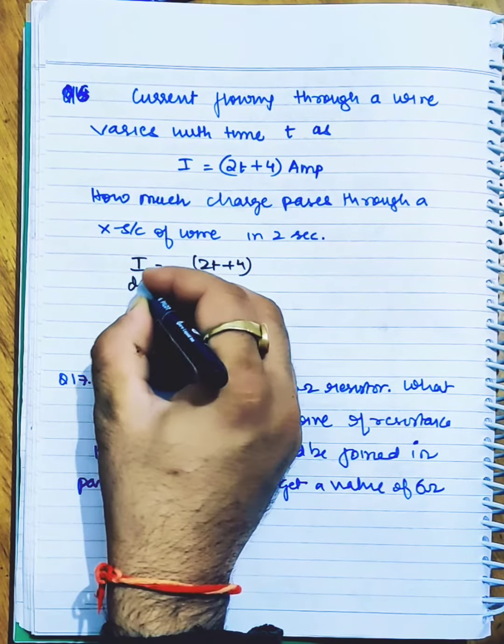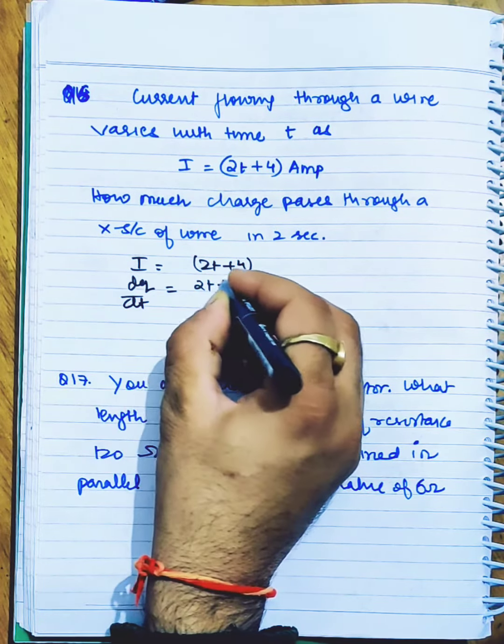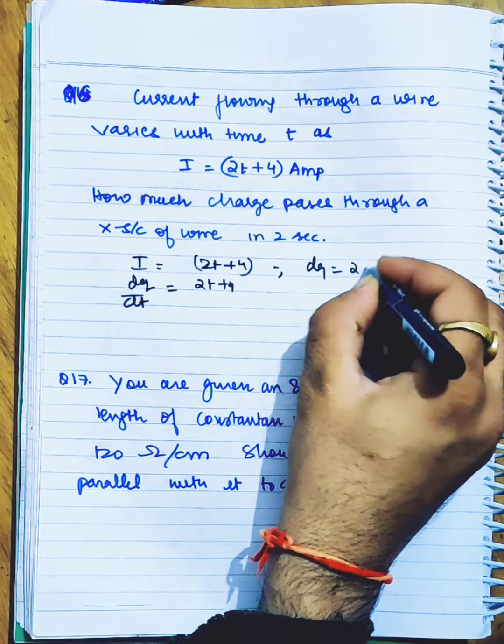To find the charge, we use the relationship I = dq/dt. Given I = 2t + 4, so dq will be (2t + 4) dt.